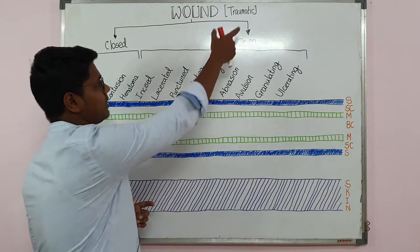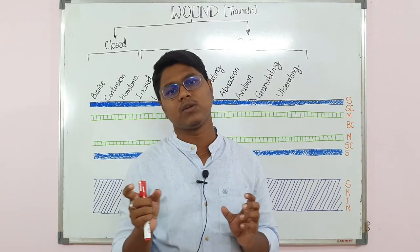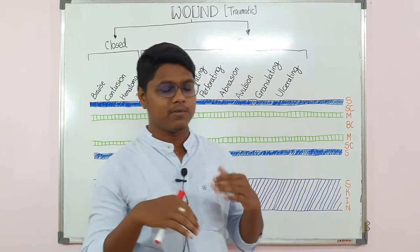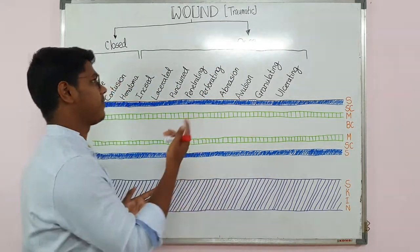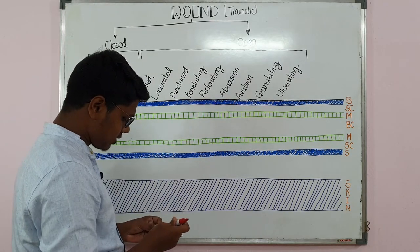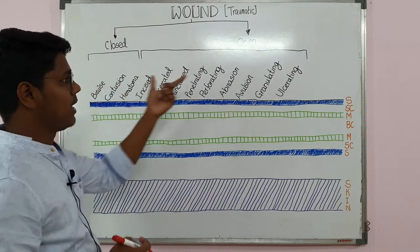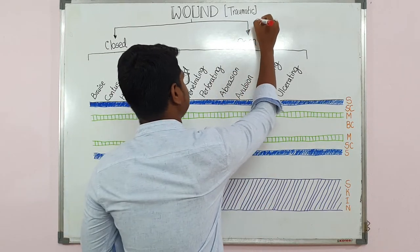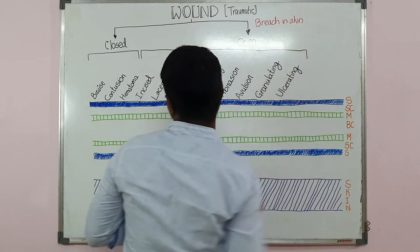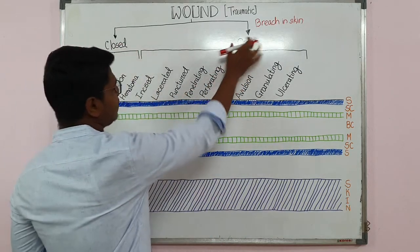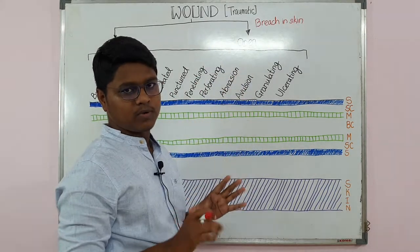I have mentioned here traumatic and surgical wound for your better remembrance, but there is no formal classification called traumatic wound or surgical wound — you may not find this in any book. The wounds are basically classified as closed wound or open wound, depending on the breach in skin. In a closed wound there will be no breach in skin, while in an open wound there will be loss of continuity in skin.